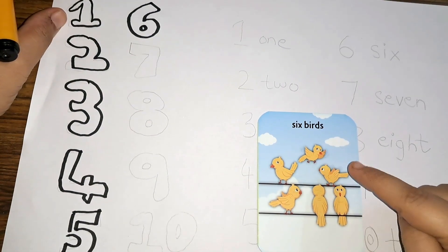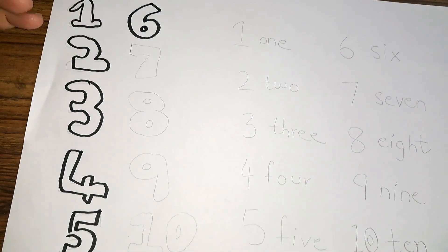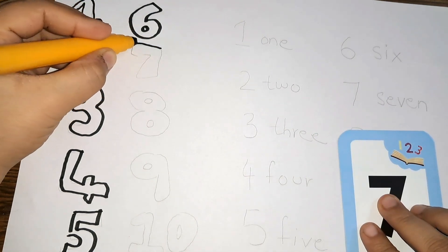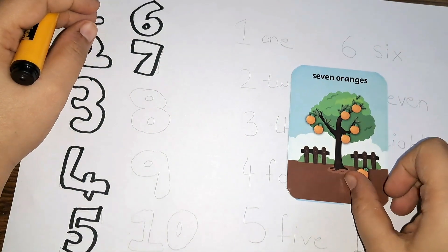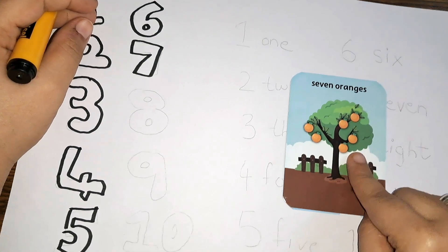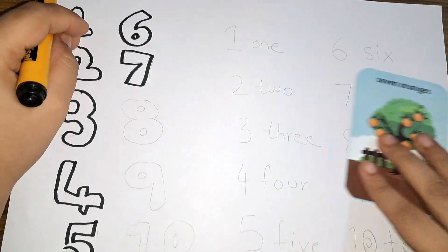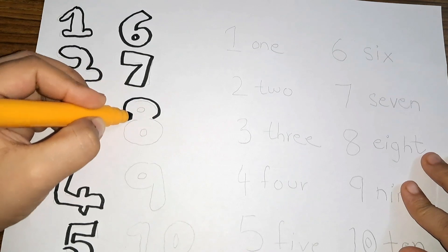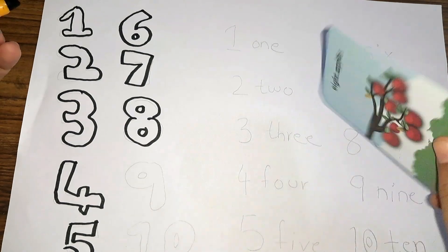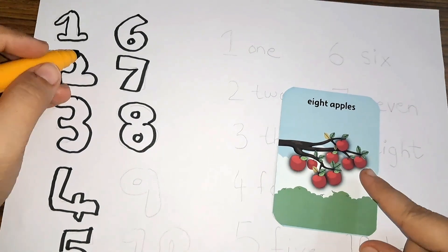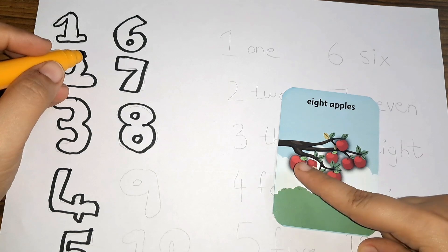Number 6 — 6 birds: 1, 2, 3, 4, 5, 6. 6 birds. Number 7 — 7 oranges: 1, 2, 3, 4, 5, 6, 7. 7 oranges.